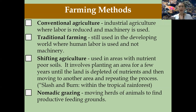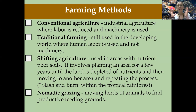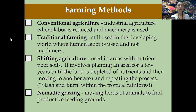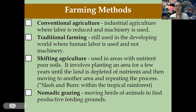When thinking about farming methods, there are four types: conventional agriculture — what's happening right now; traditional farming — going back to more sustainable subsistence roots; shifting agriculture — moving from one place to another and rotating crops; and nomadic grazing — rotating animals rather than crops, moving herds to find more productive areas and not overgraze or deplete the land in one area. Shifting agriculture focuses on crops; nomadic grazing focuses on animals, but both address the same principle of not over-depleting an area.